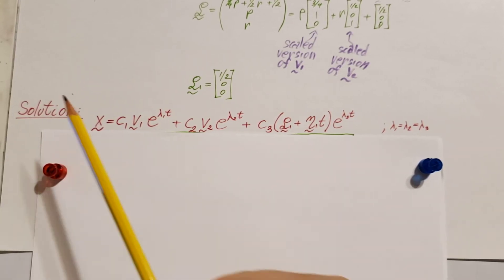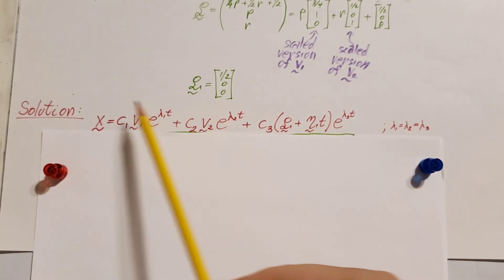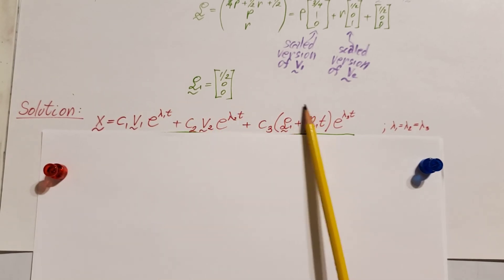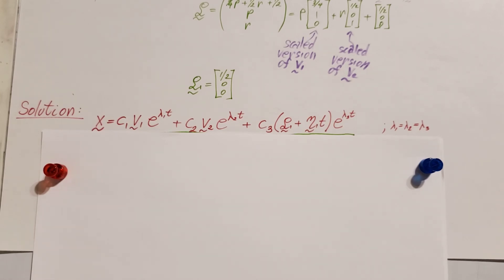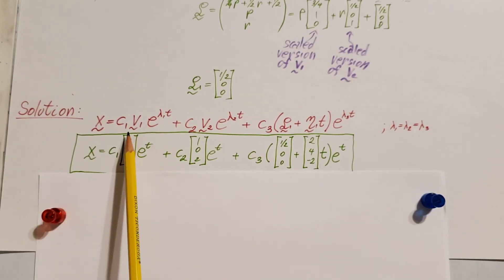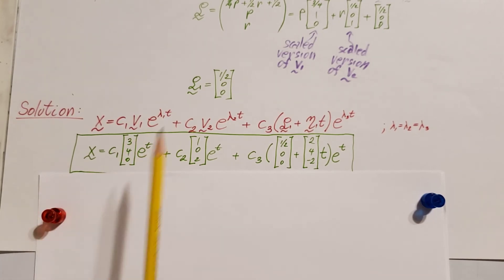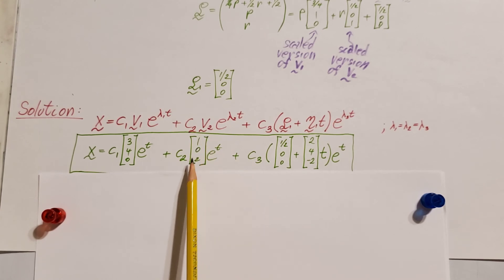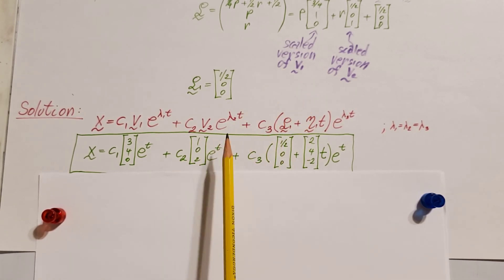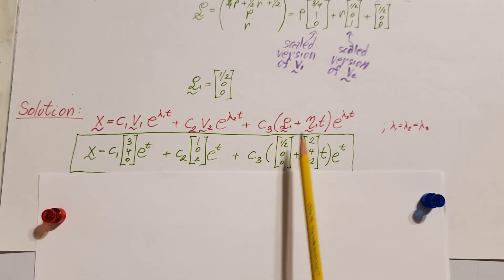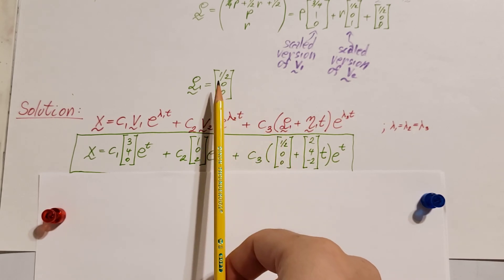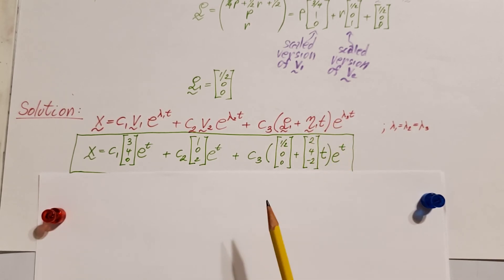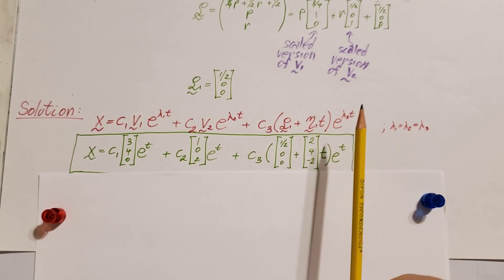Finally, we have figured out everything we need, so we can write up our solution. Here's the formula for it. This one comes from the first eigenvector, this from the second, and this from the third. Plugging everything in: C1 times V1 = (3, 4, 0) times e to the T, plus C2 times V2 = (1/2, 0, 1) times e to the T, plus C3 times Q1 = (1/2, 0, 0) plus eta1 = (2, 4, negative 2) times t, all times e to the T. We can also break these out as X1, X2, and X3.